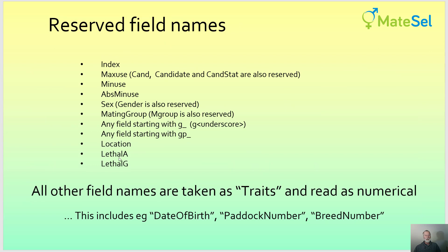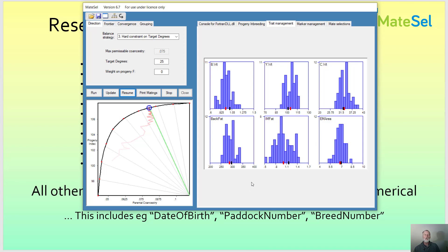Summarising: the reserved field names we've discussed mean that any other name given to a field is taken as a trait — in quotes, because they may not actually be traits. It could be date of birth, paddock number, or breed information. All non-reserved fields are put under trait management, meaning you can manipulate those traits for various outcome types. They could represent, for example, the average genetic merit of the parents or the average ages of the parents, or the average paddock number. You can use this approach to creatively manage certain aspects of your breeding program.